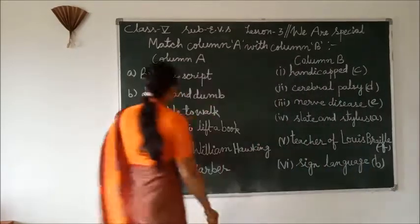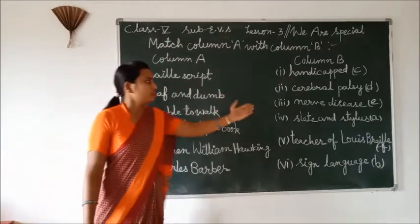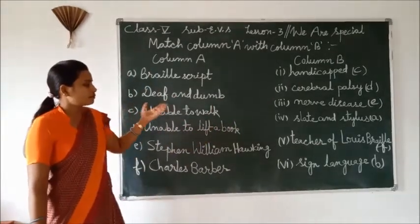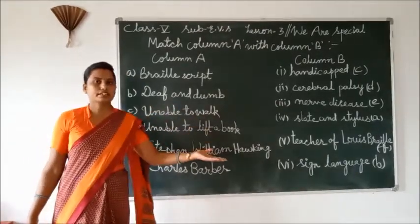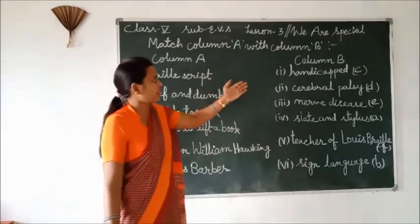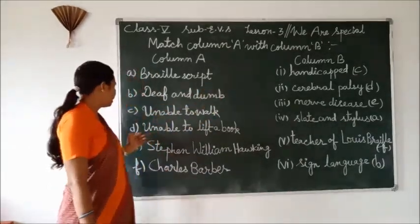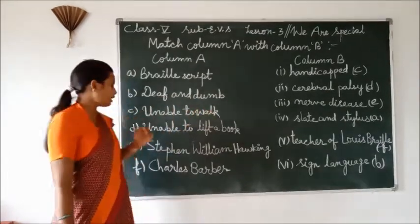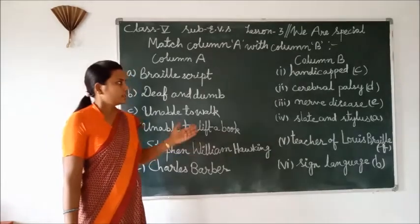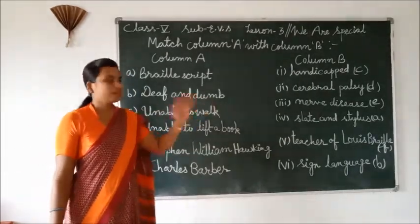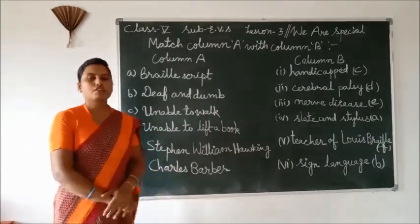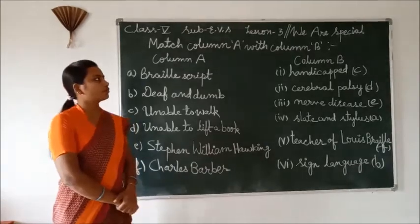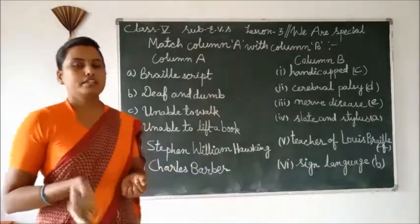Ok, I repeat it again. A: Brain — slip and stylus. B: Deep and down — sign language. C: Unable to walk — handicapped. D: Unable to lift up a book — cerebral palsy. E: Stephen William Hawking — nerve disease. F: Charles — teacher of Louis Brain.